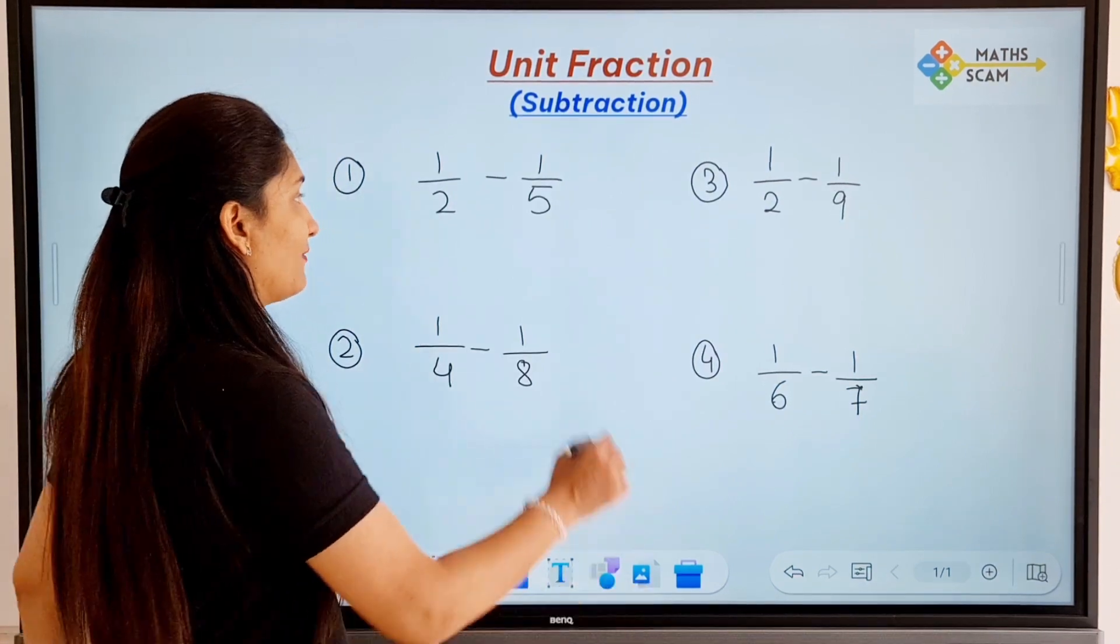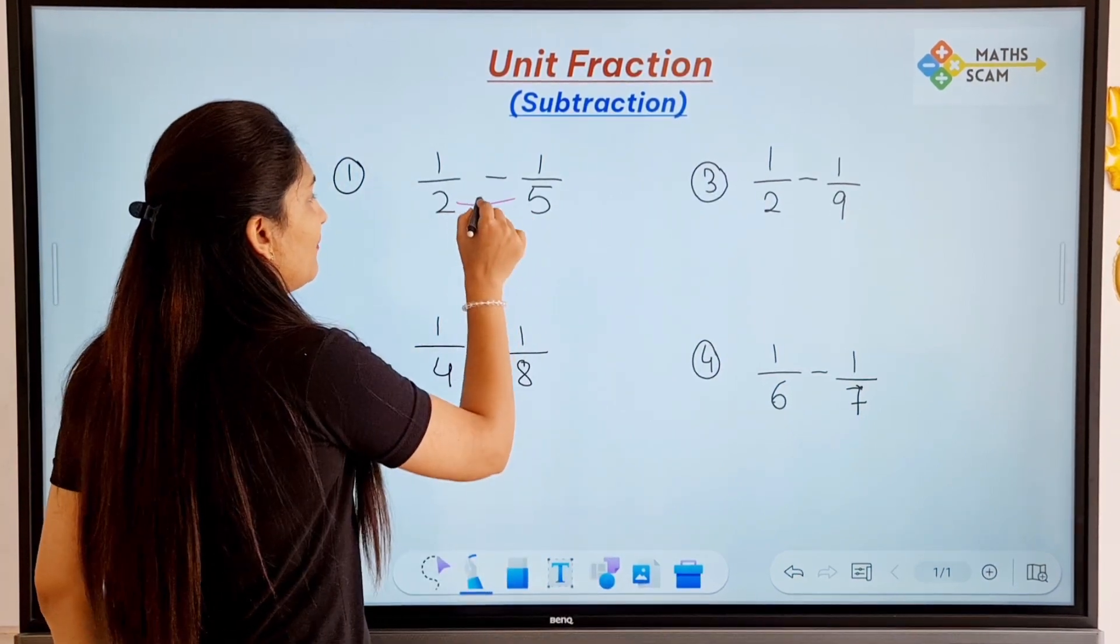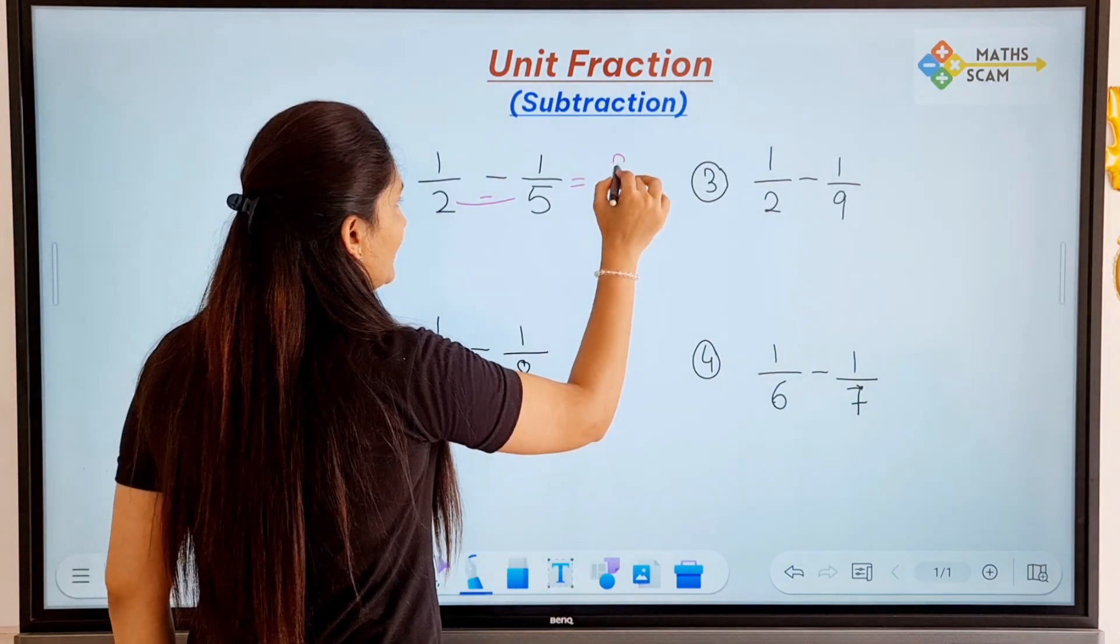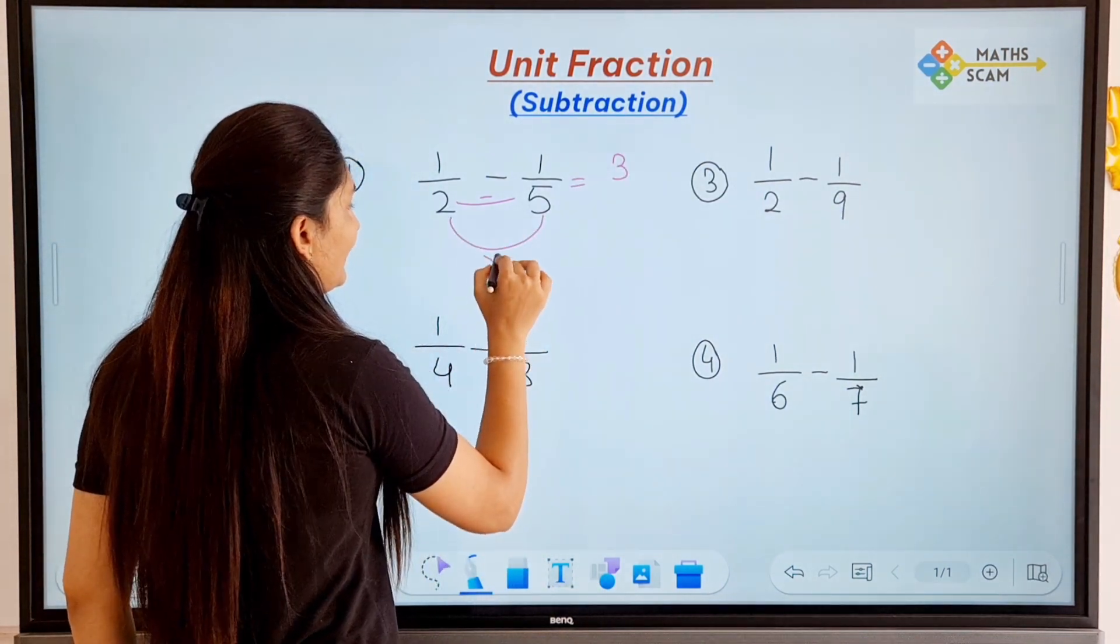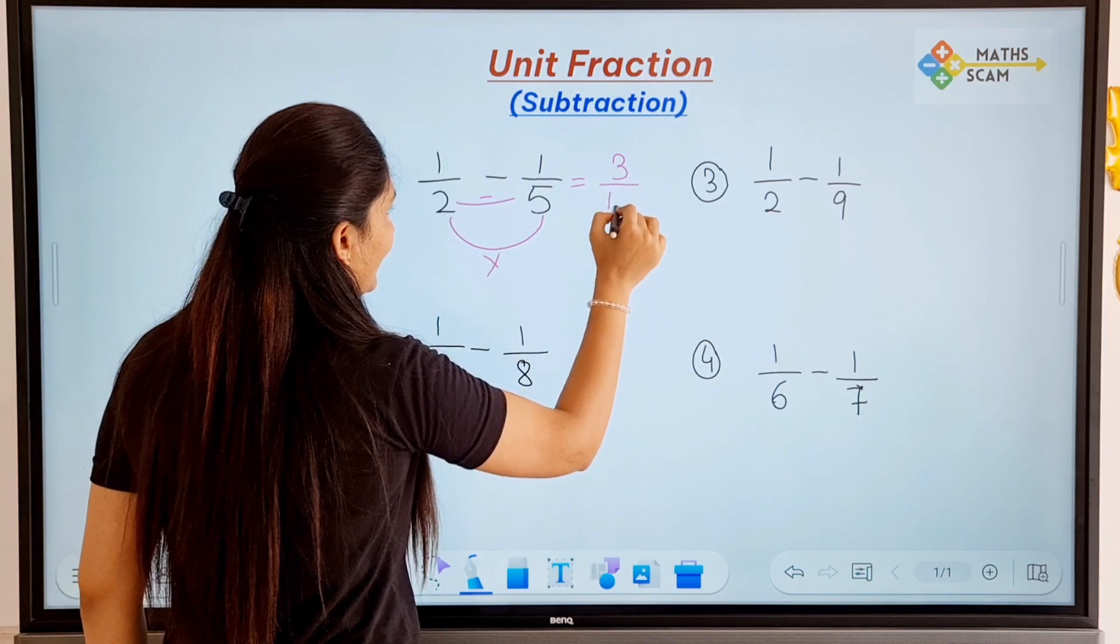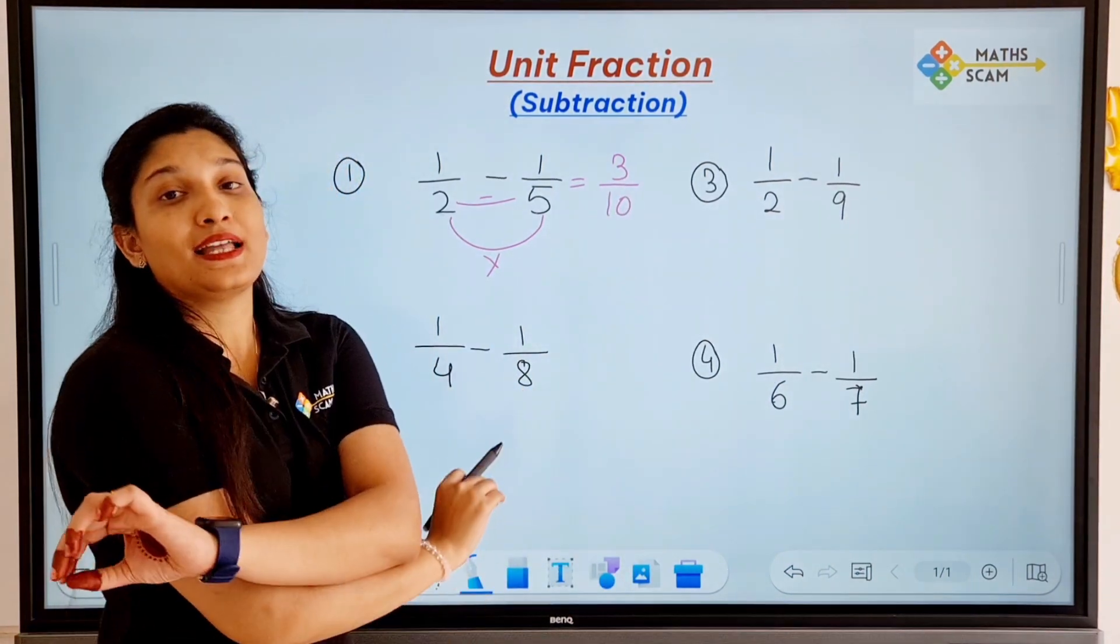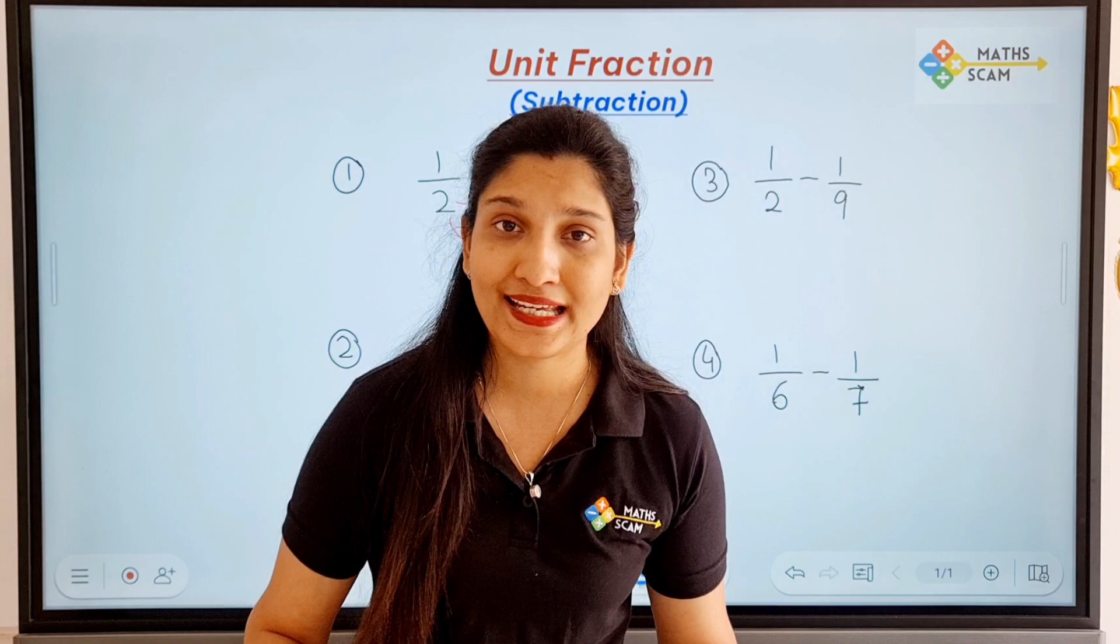So what you have to do is, you just have to subtract these 2 numbers. 5 minus 2 is 3, so 3 will be on numerator. Then just do multiplication, 5 times 2 is 10 and 10 will be on denominator. It is that simple. Very easy.